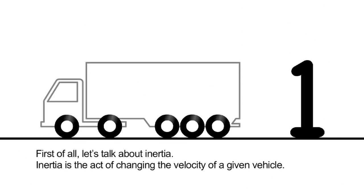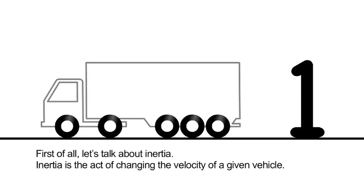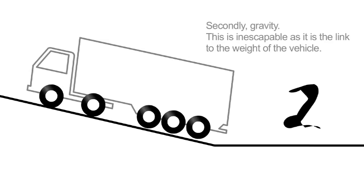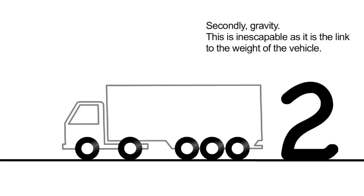First of all, let's talk about inertia. Inertia is the act of changing the velocity of a given vehicle. Secondly, gravity. This is inescapable, as it is the link to the weight of the vehicle.